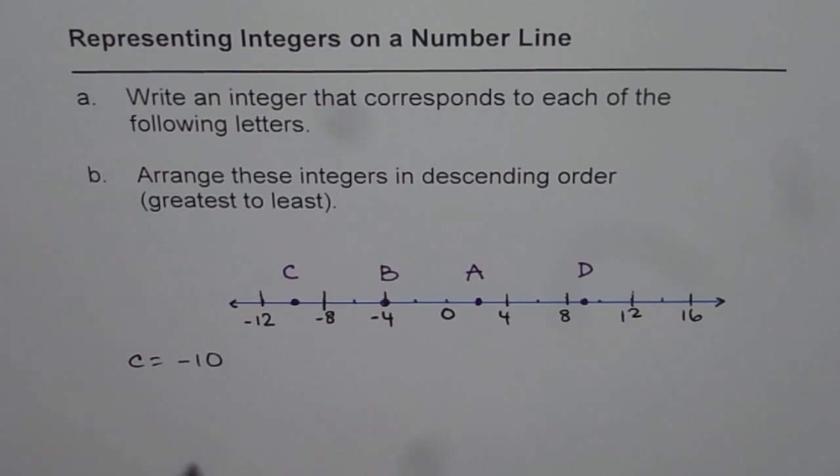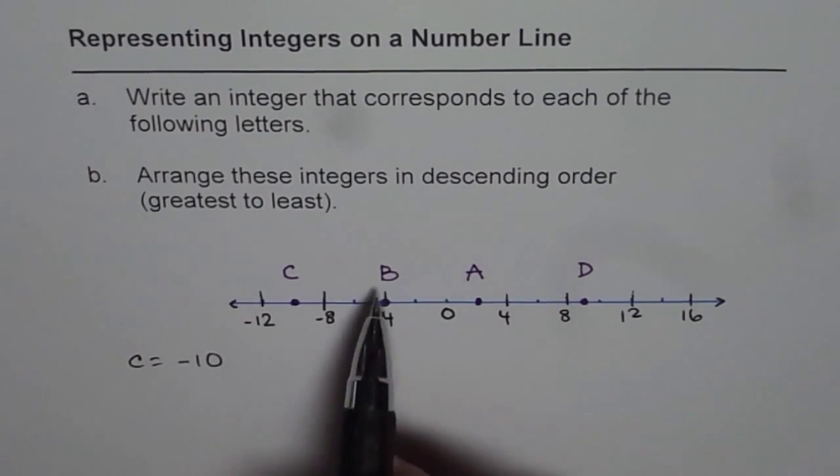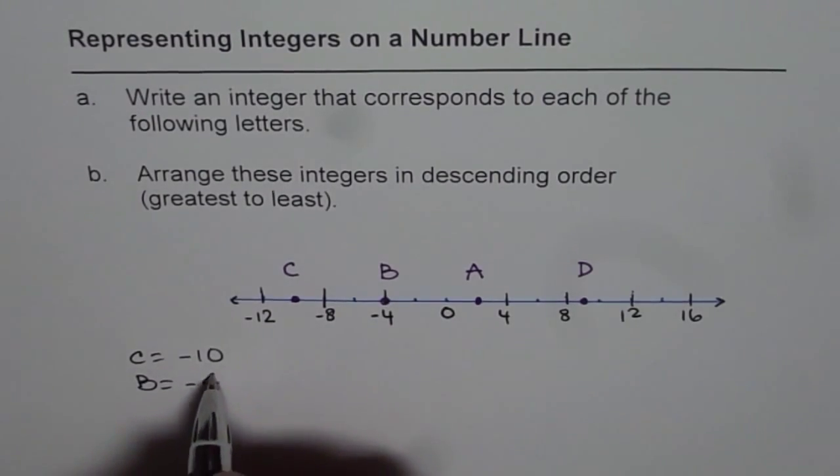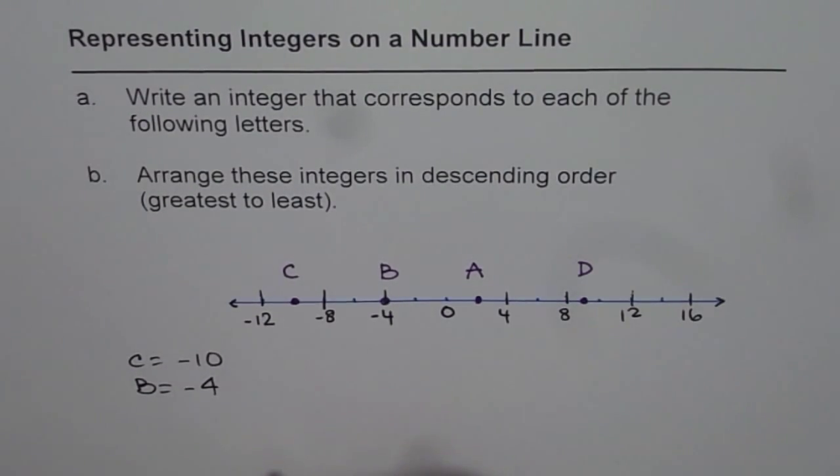So C is indeed minus 10. Now what about B? B is right there at minus 4. So we can read directly B is minus 4.